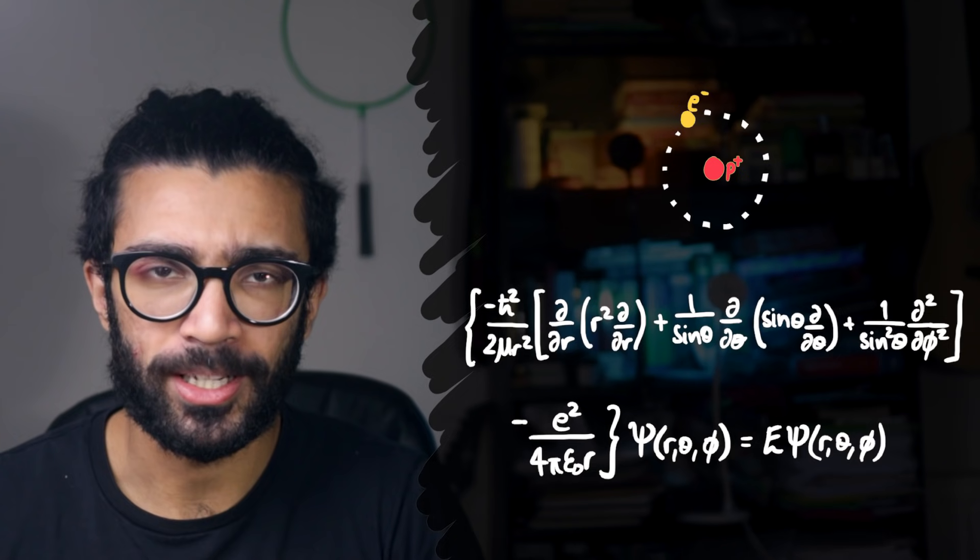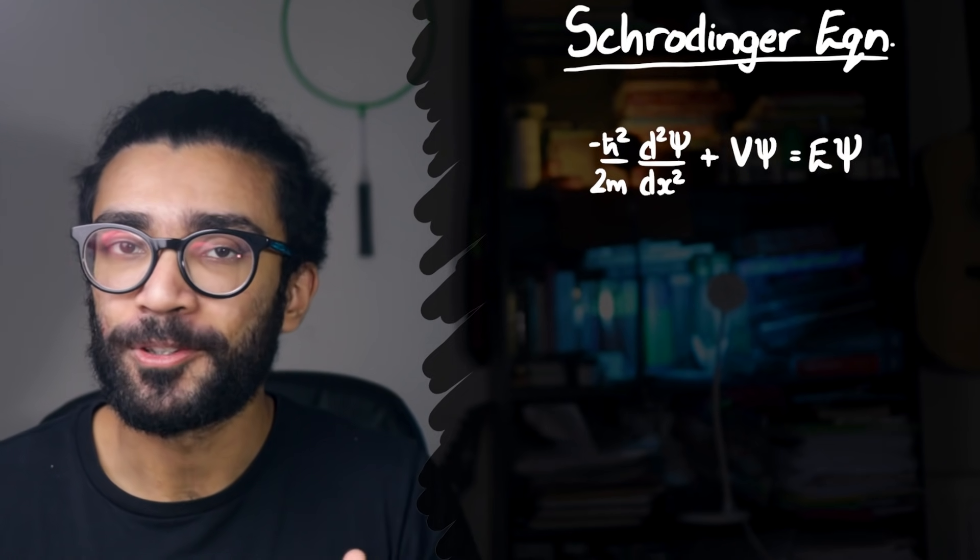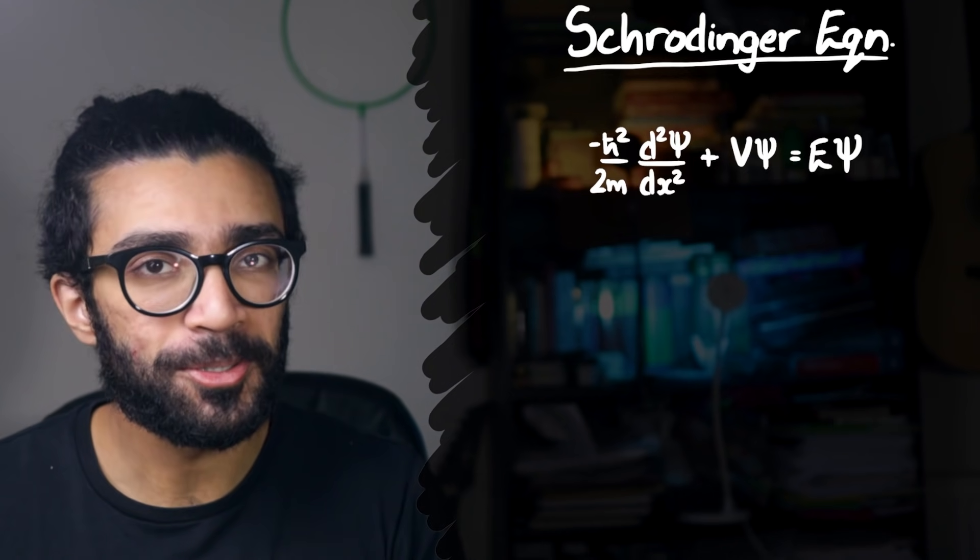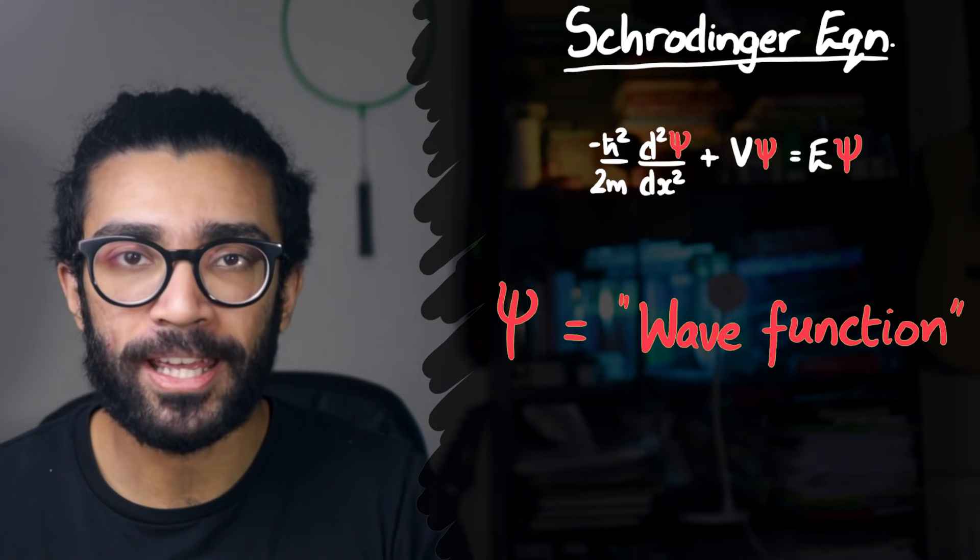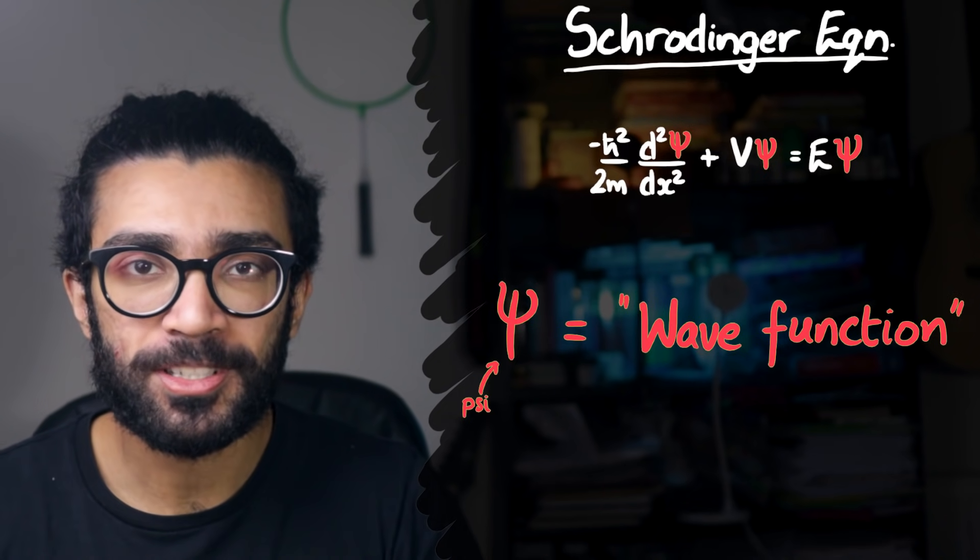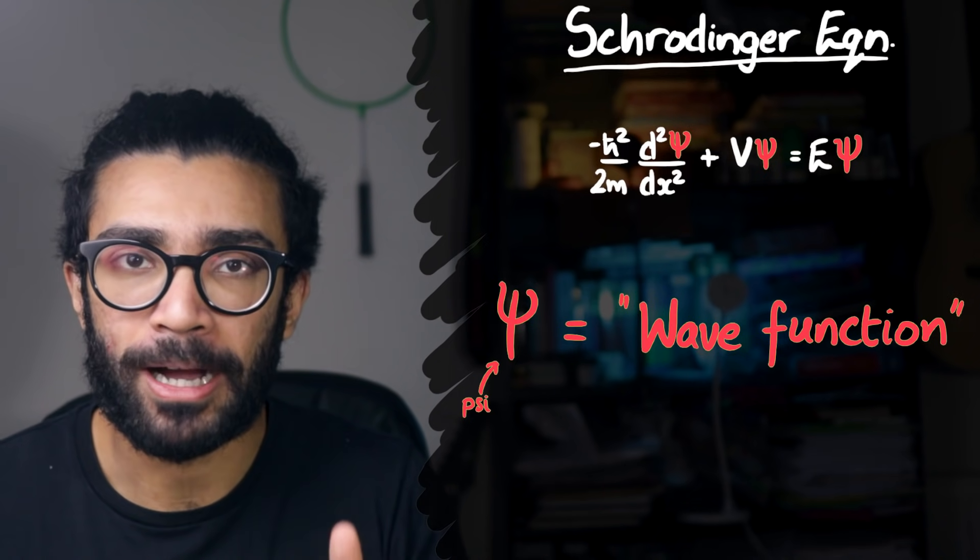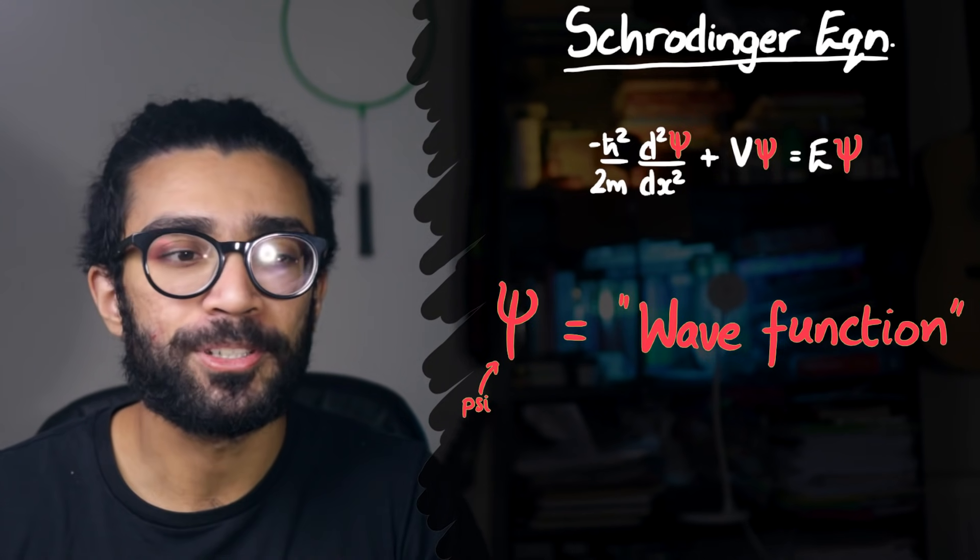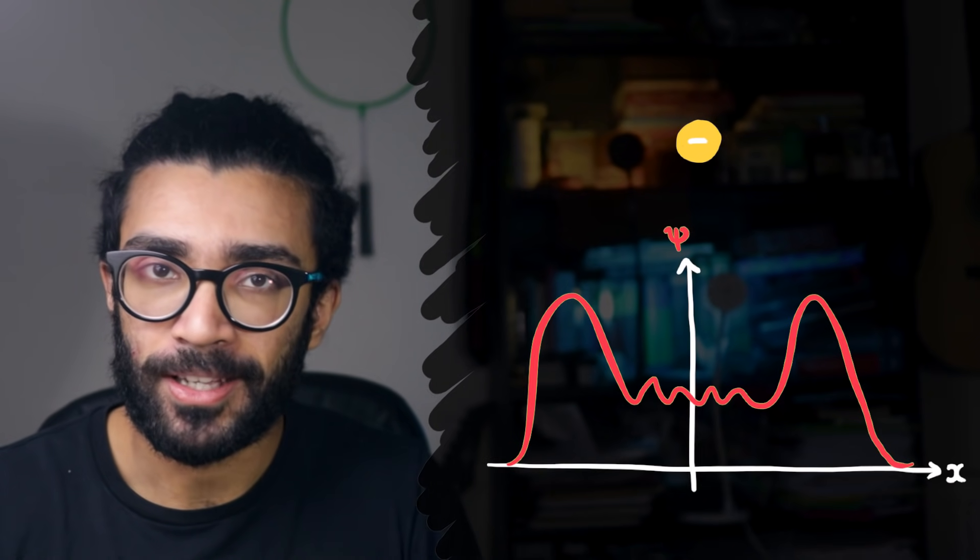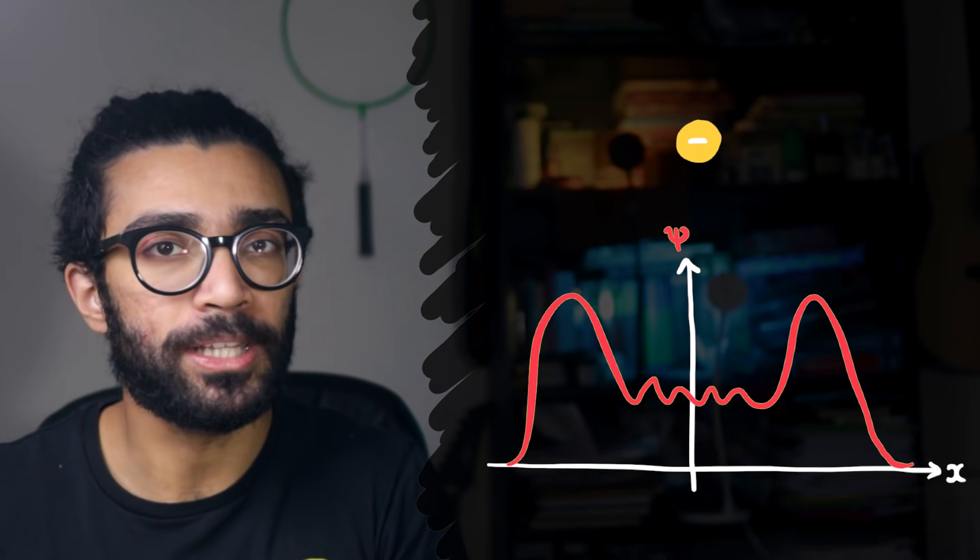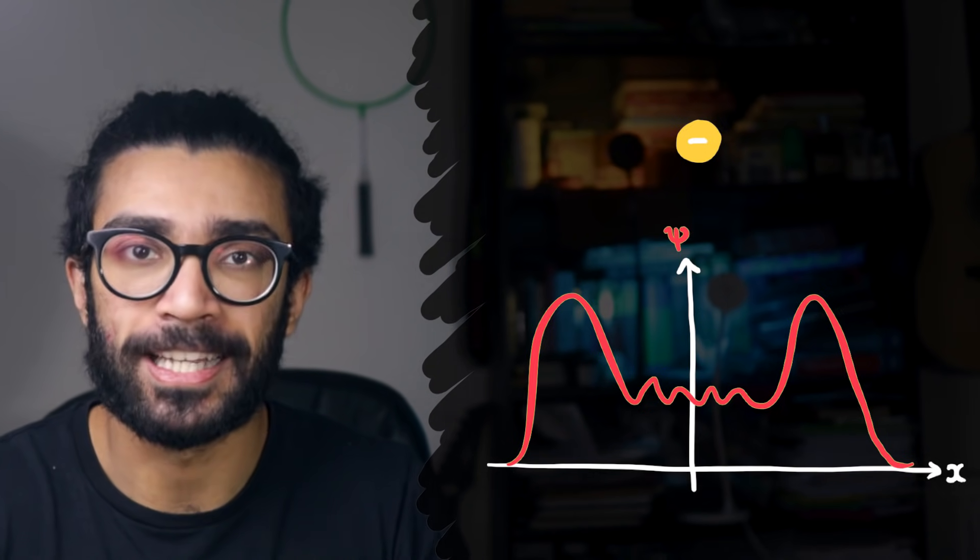But first, what are we dealing with when we're talking about the Schrödinger equation? Well, if you've seen my old video on this topic then you might recall that the Schrödinger equation deals with a quantity known as the wave function. The wave function is often denoted by the Greek letter psi and it's used to describe everything that we know about a particular system that we happen to be studying. For example, if we happen to be studying an electron moving around in space, then the wave function of the electron is basically a mathematical function that gives us all the information we have about that electron.